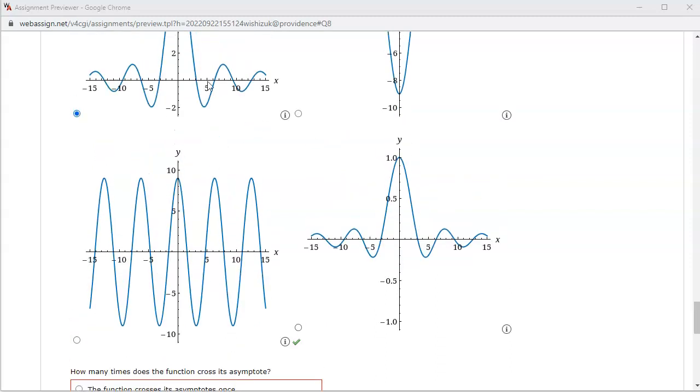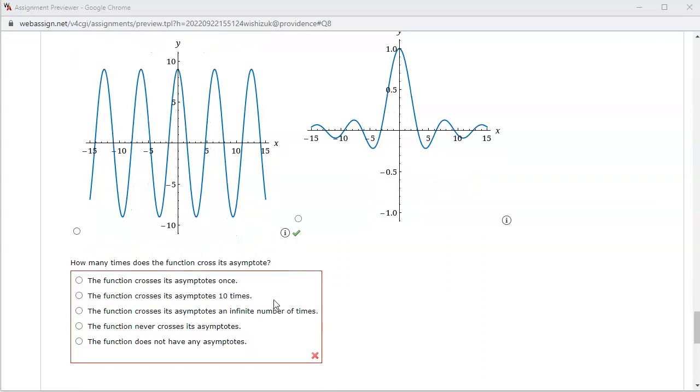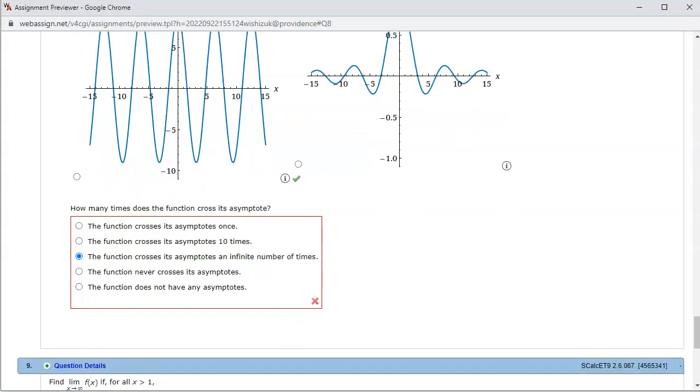How many times does the function cross its asymptote? This guy actually, you can see that it's going to cross infinitely many times. So it looks like the function crosses its asymptote an infinite number of times. So this is going to be the answer. Let's check the answer.